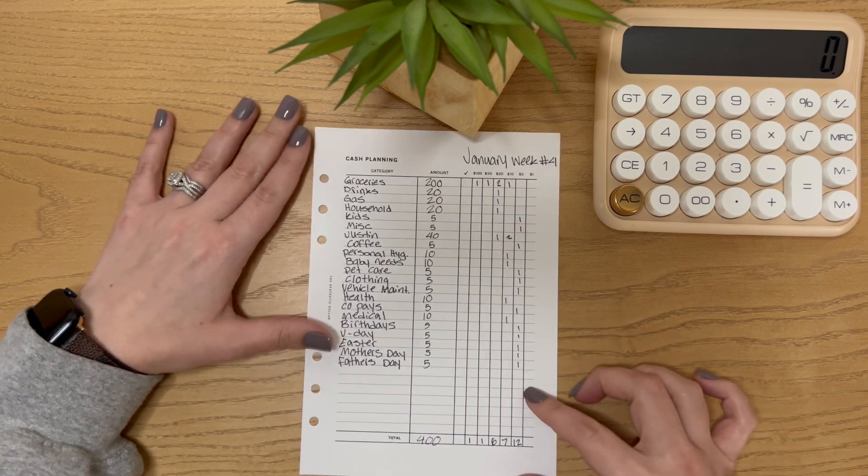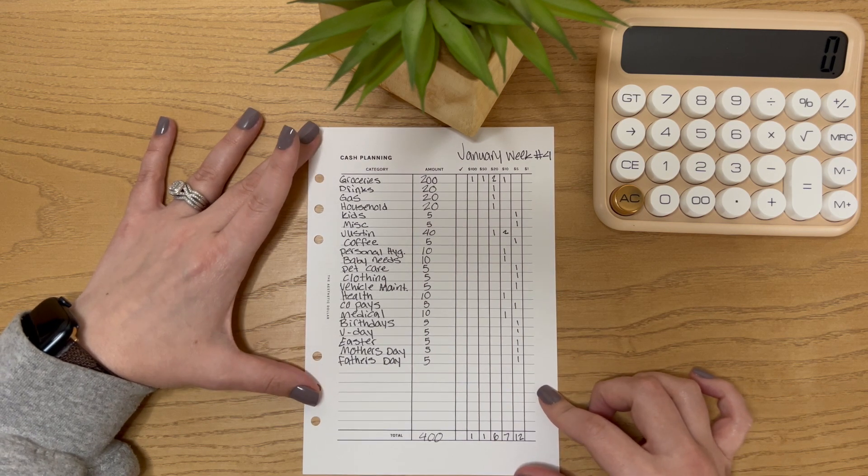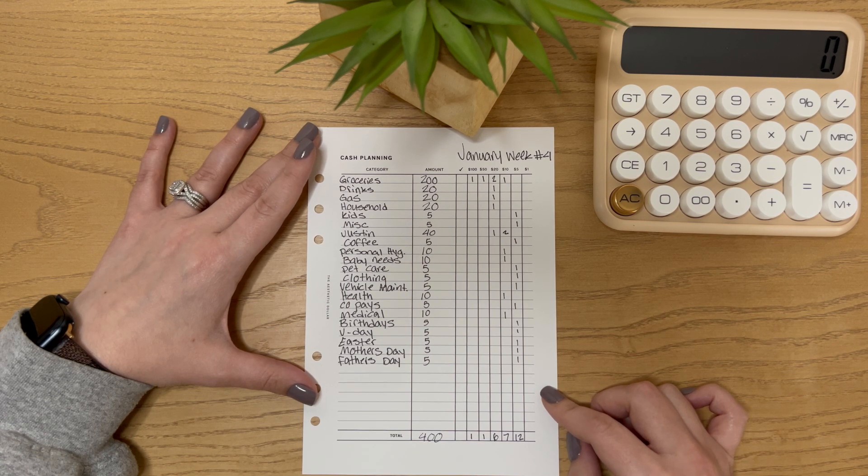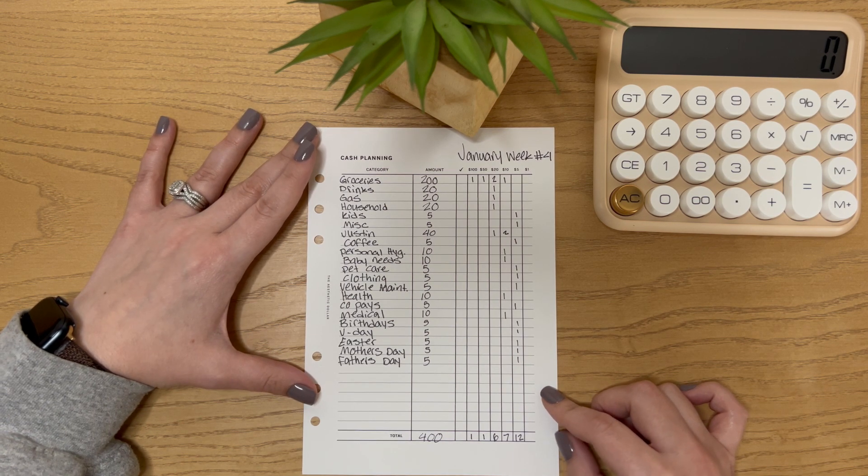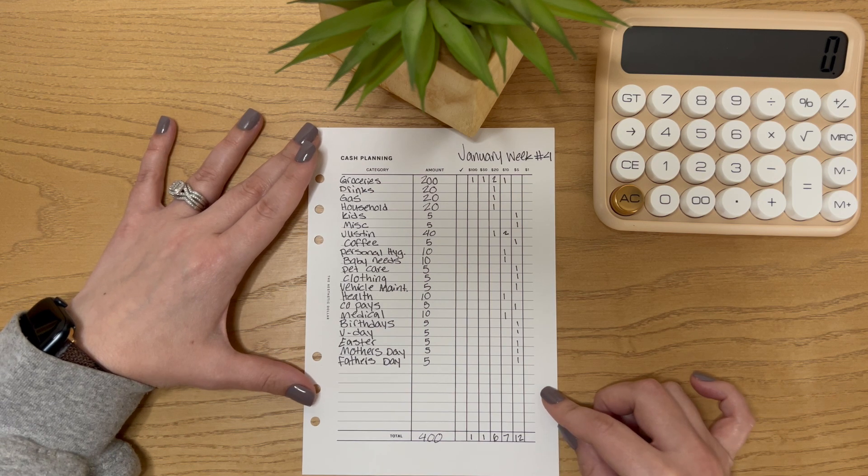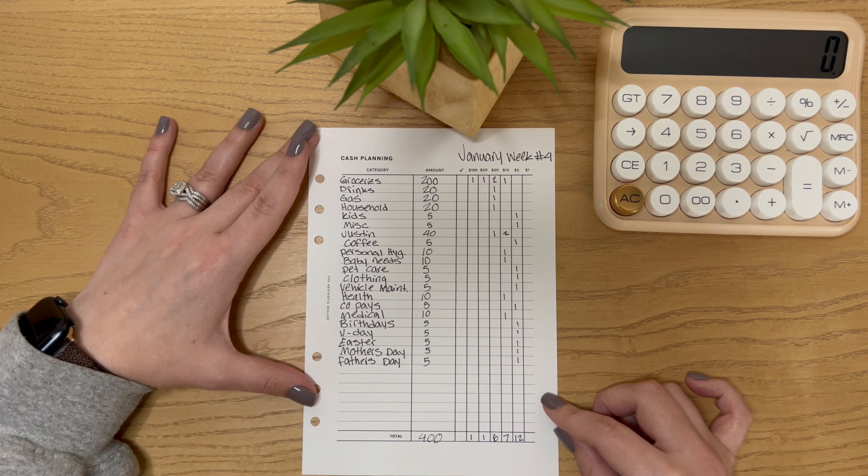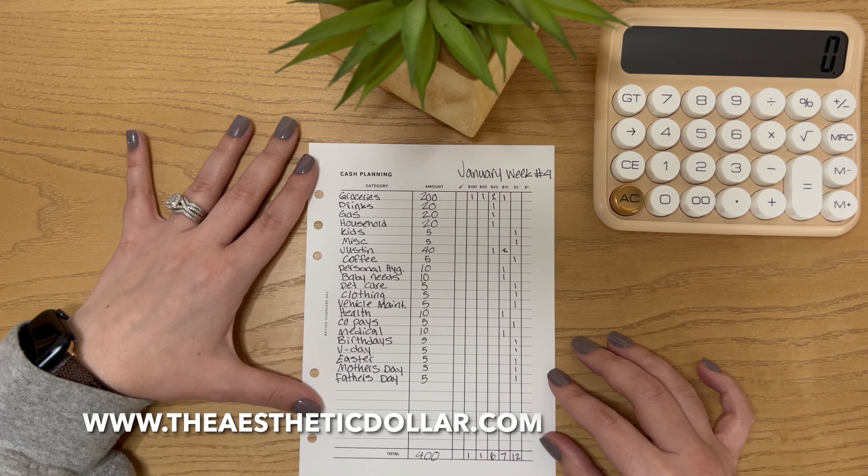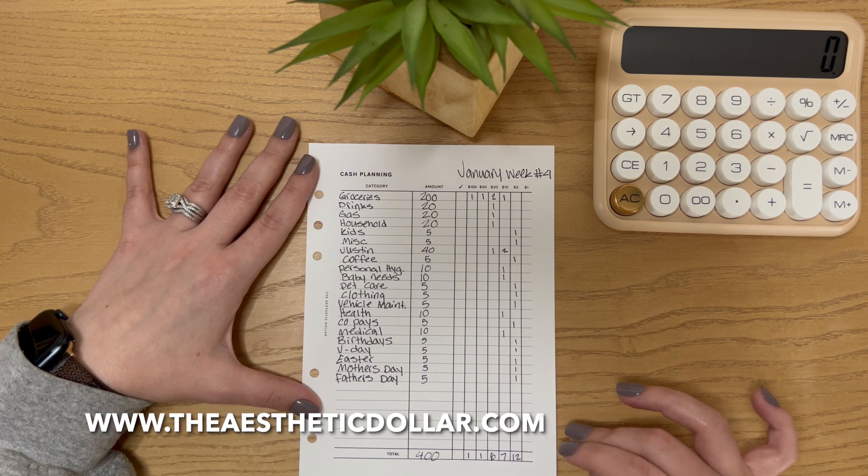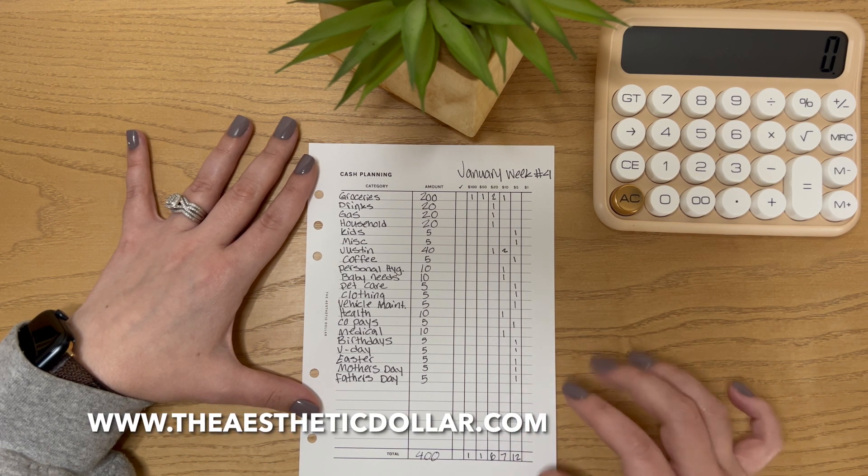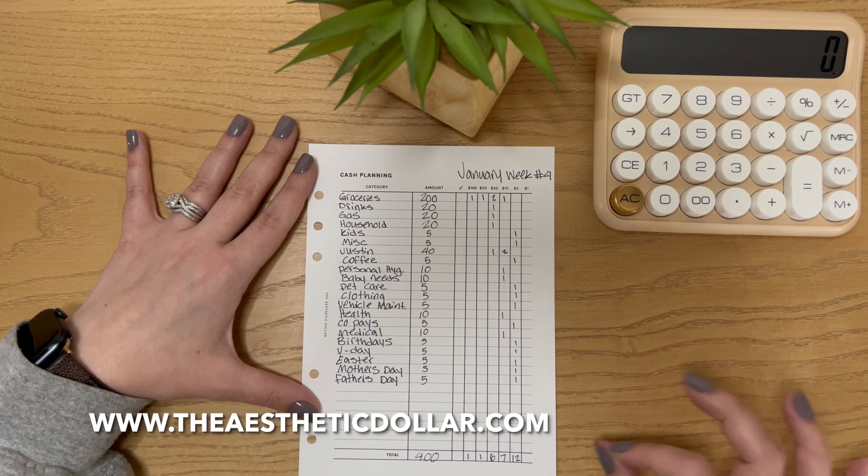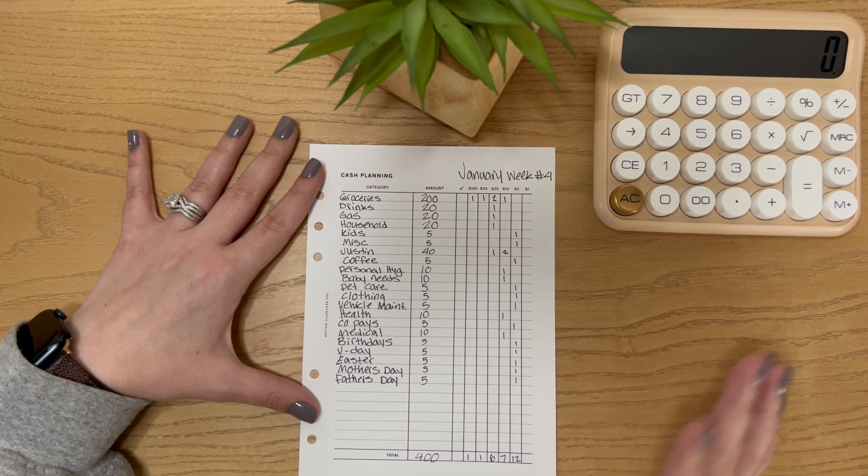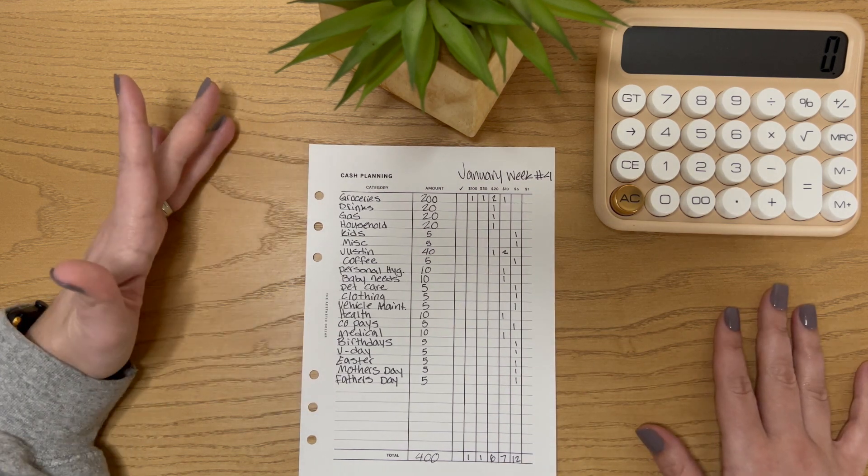That's pretty much how I do it. I got this sheet from the Aesthetic Dollar. It's actually part of her budget binder that she has. She offers as a digital download and I love it so much. I can print off however many sheets I need whenever I want. If you guys are interested in this, you can just go to her website. It's theaestheticdollar.com. And I know she just redesigned the budget binder for 2024. It's pretty similar, but there are some small changes and it's basically the same thing. So yeah, if you're interested in that, check her website out.